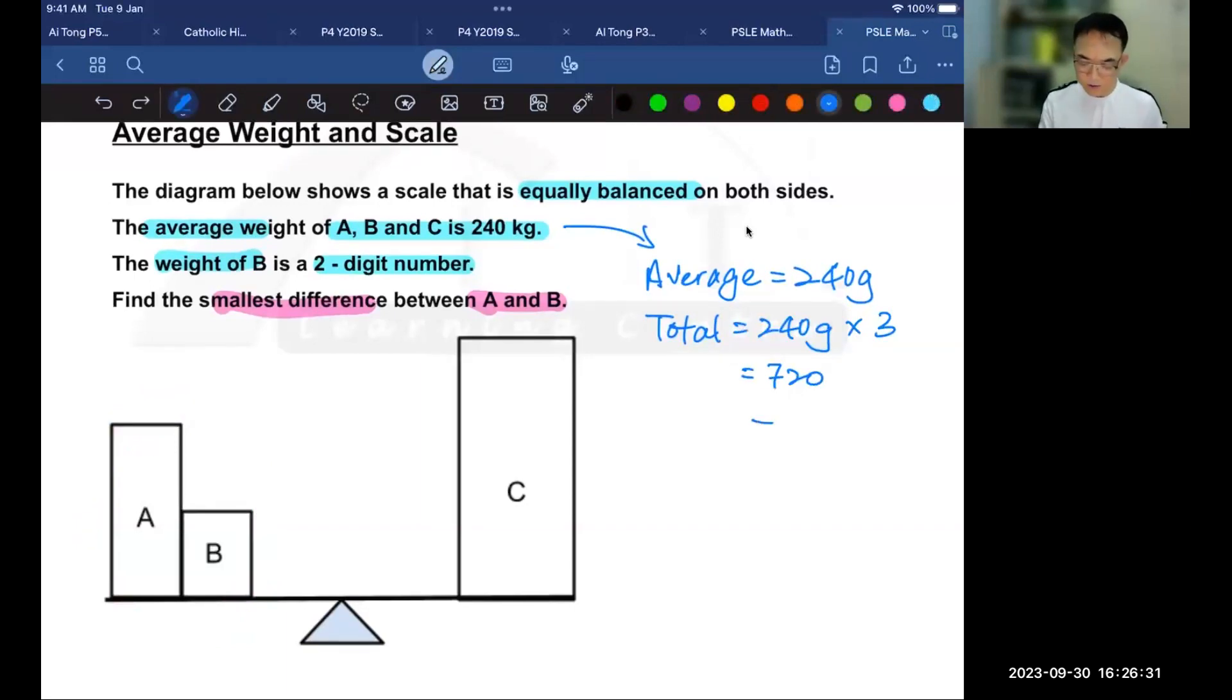If you took 720 divided by 2 to get 360, then you're right. The reason is that A and B together equal C, meaning we have two equal parts. So we can divide by 2.